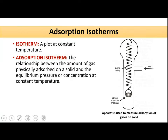The next topic under the gas-solid interface is the adsorption isotherm. An isotherm is a plot at constant temperature showing the relationship between the amount of gas physically adsorbed on the solid and the equilibrium pressure. On the y-axis you have the amount of gas; on the x-axis you have the equilibrium pressure. The plot between these two at constant temperature is your adsorption isotherm. This apparatus is most commonly used to measure how much gas is getting adsorbed on the solid surface.